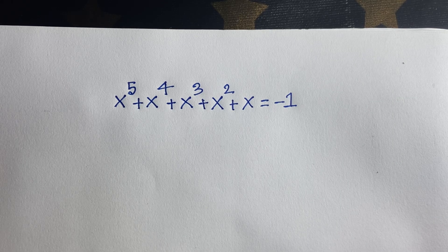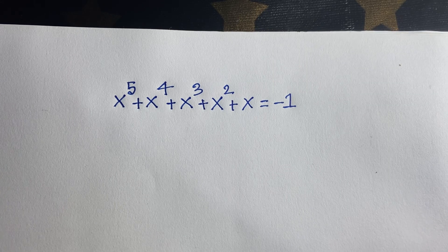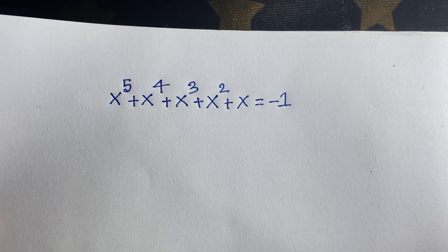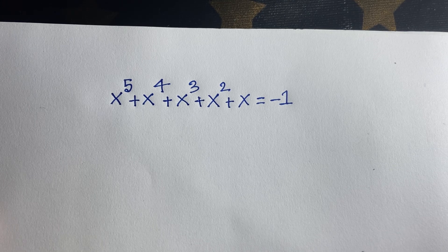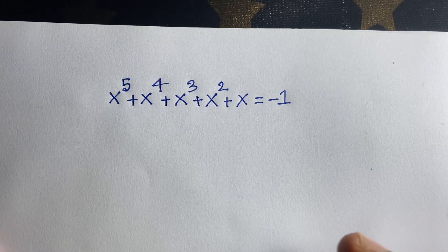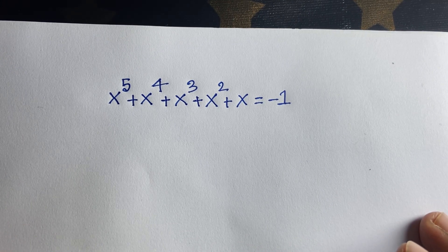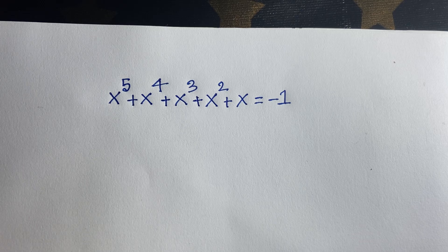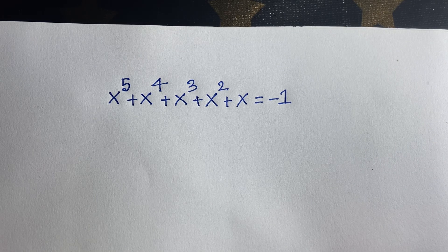Hello everyone. In this video, we have solved this exponential equation. It is a Japanese Math Olympiad question. The question is x to the power 5 plus x to the power 4 plus x to the power 3 plus x to the power 2 plus x is equal to minus 1. We will find out the value of x in this exponential equation.